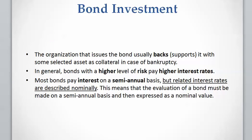Usually the issuer of the bond has to support or back the bond with some selected asset as collateral in case of bankruptcy. Bonds with a higher level of risk pay a higher interest rate. The interest rate has to be reported nominally, but the interest can be paid on a semi-annual basis.